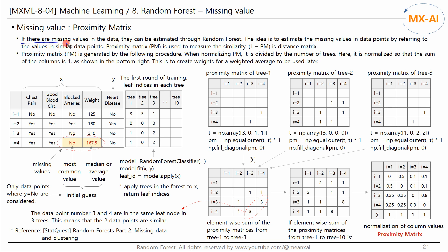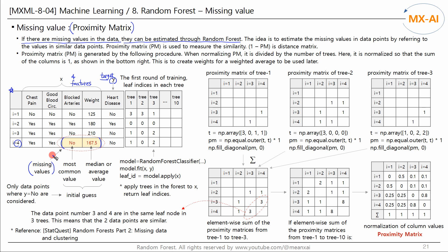If your data has missing values, you can use random forest to estimate the missing values. A proximity matrix is used for that purpose. Let's look at the simple data below. There are 4 data points in total, 4 features X, and 1 target class Y. These values are missing in the 4th data point. Our goal is to estimate these missing values using the proximity matrix of random forest.